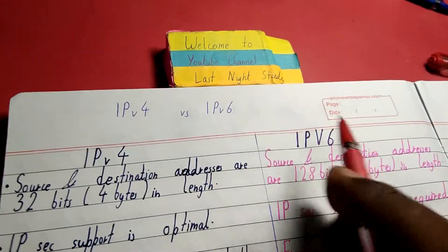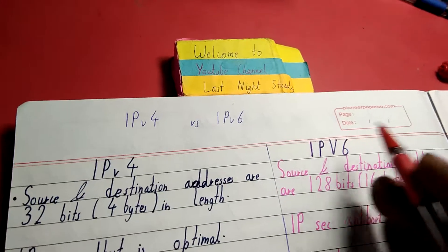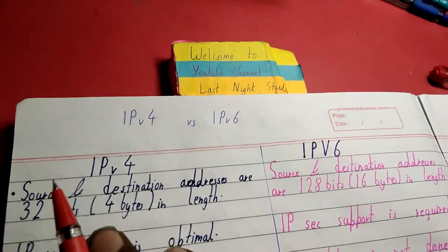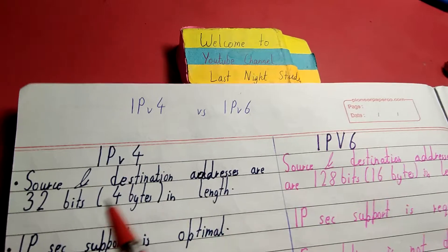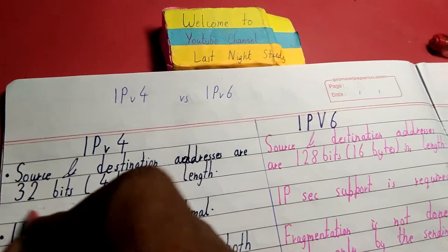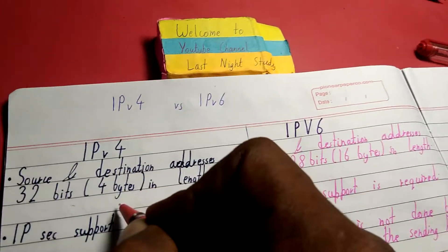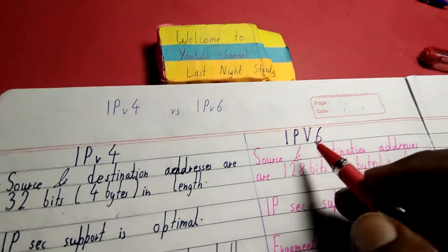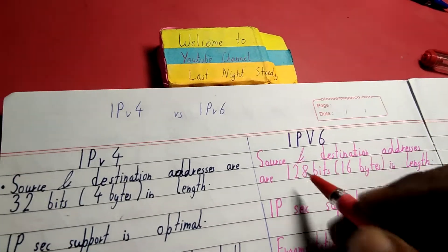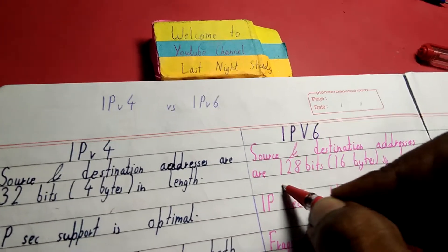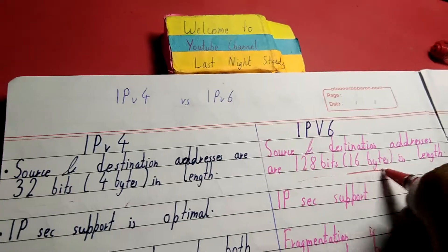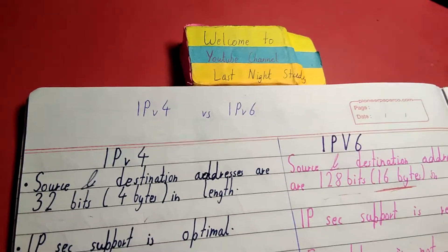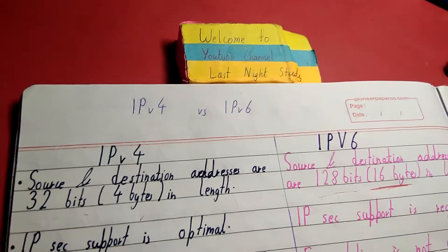Here I have made two columns — IPv4 and IPv6. If we talk about IPv4, the source and destination address are 32 bits, that is basically four bytes in length. If we talk about IPv6, the source and destination address are 128 bits, that is 16 bytes in length.